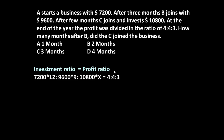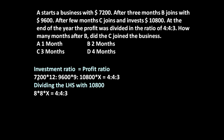So the equation is: 7200×12 : 9600×9 : 10800×x = 4:4:3, which is the profit ratio. Now let us divide the left-hand side by 10800.